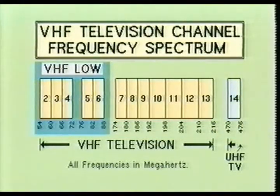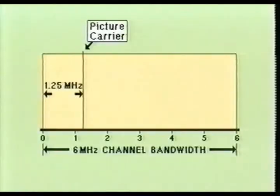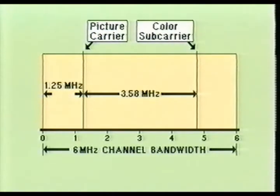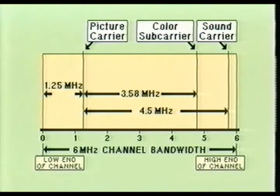Each television channel is 6 MHz wide. This 6 MHz bandwidth is the standard bandwidth for all television channels in both the UHF and the VHF channel frequencies. Channels 2 through 6 are designated as the low-frequency VHF channels. Channels 7 through 13 are designated as the high-frequency VHF channels. Each 6 MHz channel has a picture carrier located at 1.25 MHz above the low-frequency edge of the channel bandwidth. The color subcarrier is located at 3.58 MHz above the picture carrier, and the sound carrier is located at 4.5 MHz above the picture carrier, placing the sound carrier very close to the high-frequency edge of the channel bandwidth. This division of bandwidth is an industry standard for all television channels.